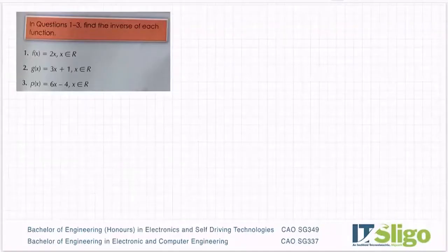Okay, let's try some examples of finding the inverse of functions. So the first one there, f(x) is equal to 2x, x is an element of R.